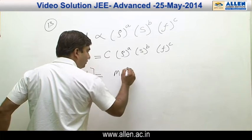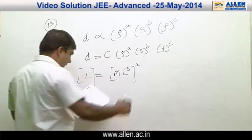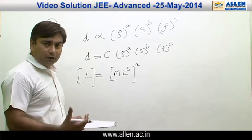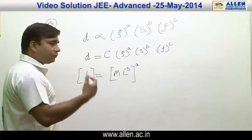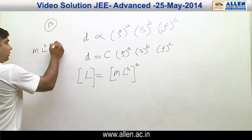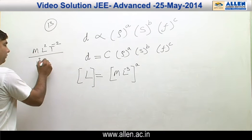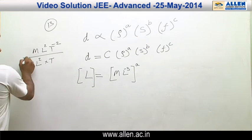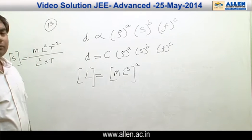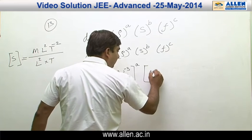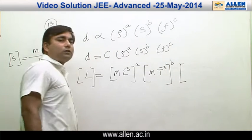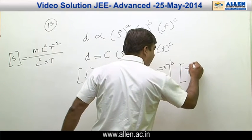For s — he has denoted s as intensity and said it is power upon area. Power is energy per unit time, so that gives energy per unit time per unit area. Energy has dimension M L² T⁻². So energy per unit time per unit area gives M L⁰ T⁻³. That is M L⁰ T⁻³ to the power b. And frequency we all know is one by time, so T⁻¹ to the power c.